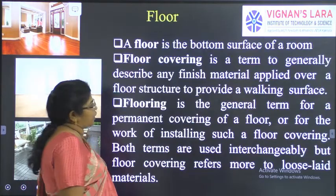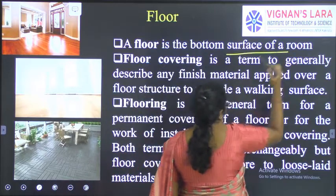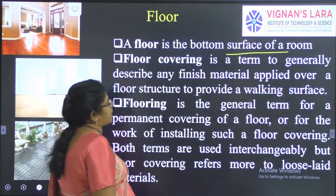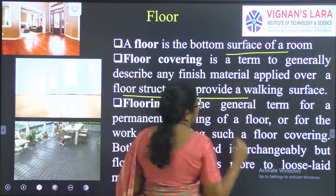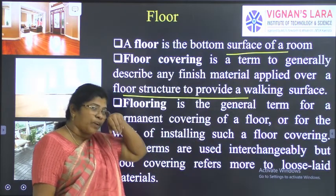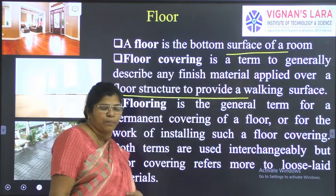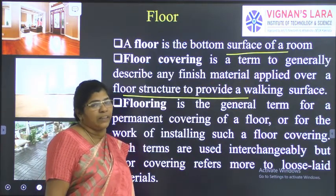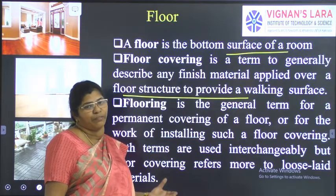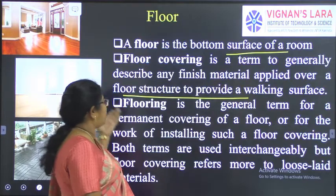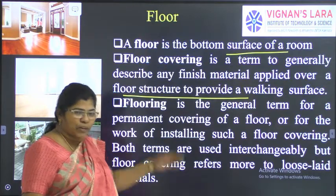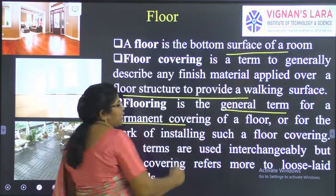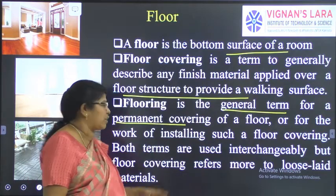What do we call the floor? A floor is the bottom surface of the room. Floor covering is a term used to generally describe any finished material applied over a floor structure to provide a working surface. So floor covering is different from the floor. Floors may be completely without concrete — that is the floor. Above the floor we go for different types of covering, which we call the flooring or floor covering. Flooring is a general term for a permanent covering of a floor or for the work of installing such a floor covering.